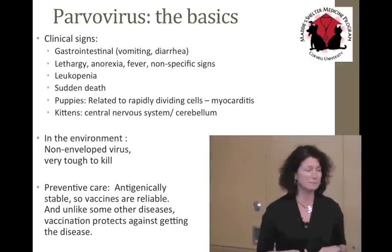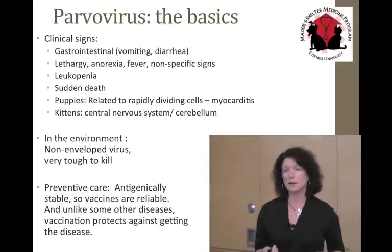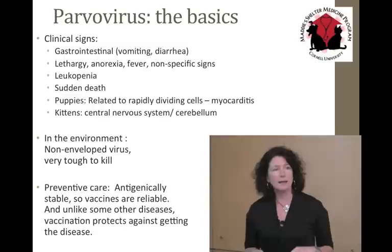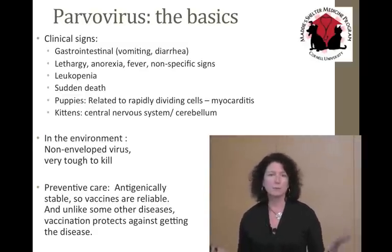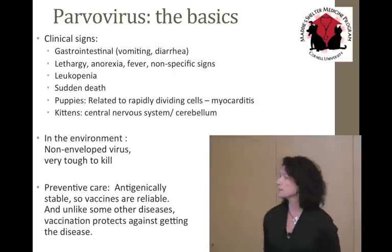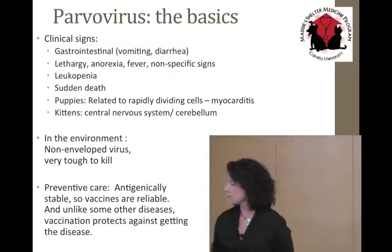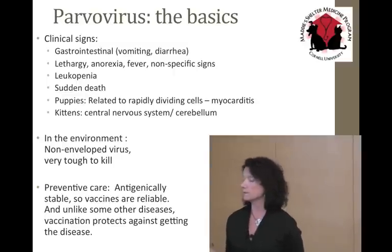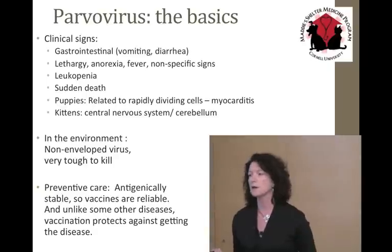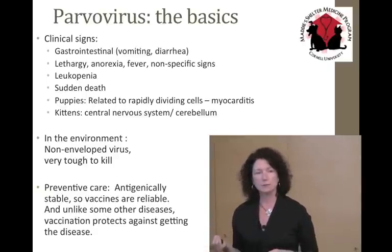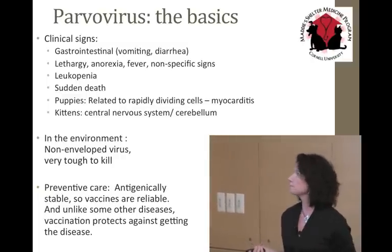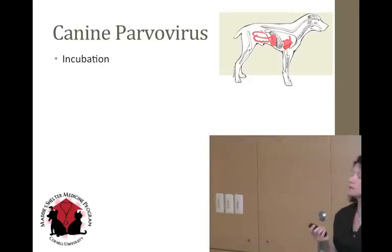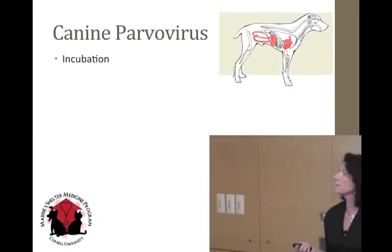Parvovirus is a very tough non-enveloped virus to kill, and it's antigenically stable, so our vaccines are very reliable. We feel pretty good about animals that have been vaccinated. Unlike practice animals with vaccination records, many of our shelter animals we just don't know — we don't know if they were vaccinated or not. But unlike a lot of respiratory diseases, if they were vaccinated and mounted an immune response, chances are they're immune from getting the disease at all.